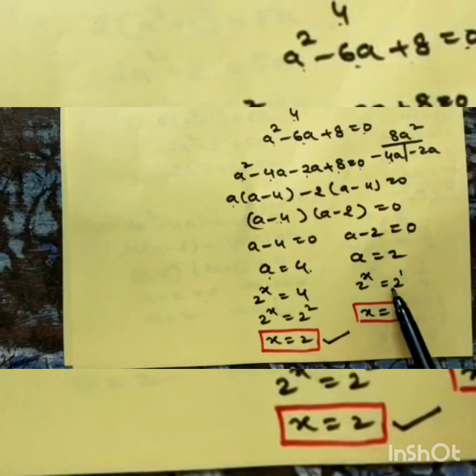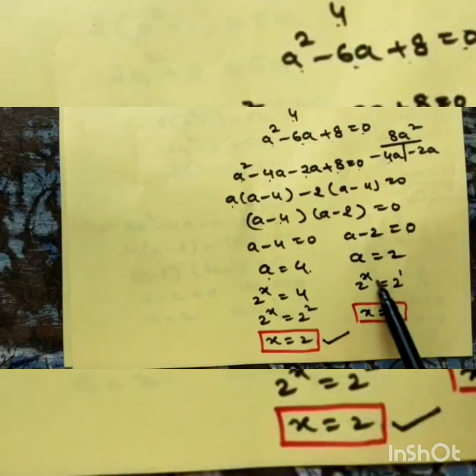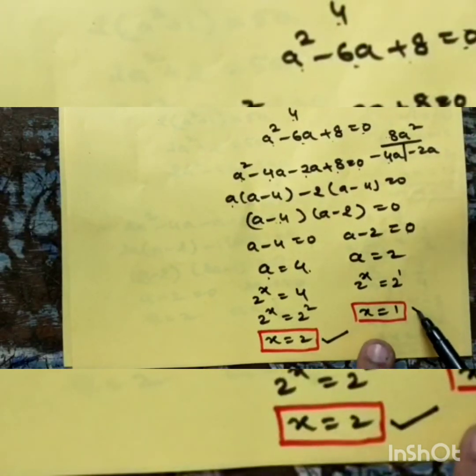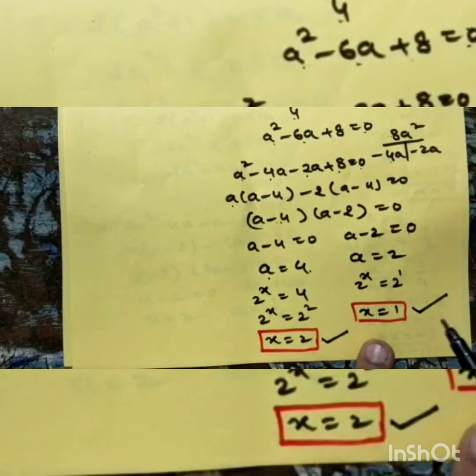For the second case, a = 2: 2^x = 2^1. Since the bases are equal, the powers are equal, so x = 1. Thank you.